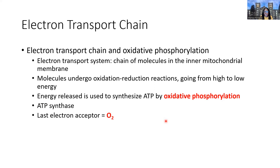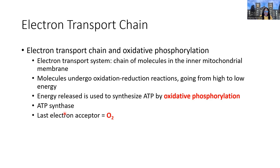Much more ATP is generated here, and it requires oxygen. The function of oxygen is to be the final electron acceptor — something at the end of the chain takes the electrons, keeps the chain moving, and allows ATP synthesis. The enzyme that synthesizes ATP here is ATP synthase. The key distinction is oxidative phosphorylation versus substrate-level phosphorylation, which is how ATP is made in glycolysis and the Krebs cycle.